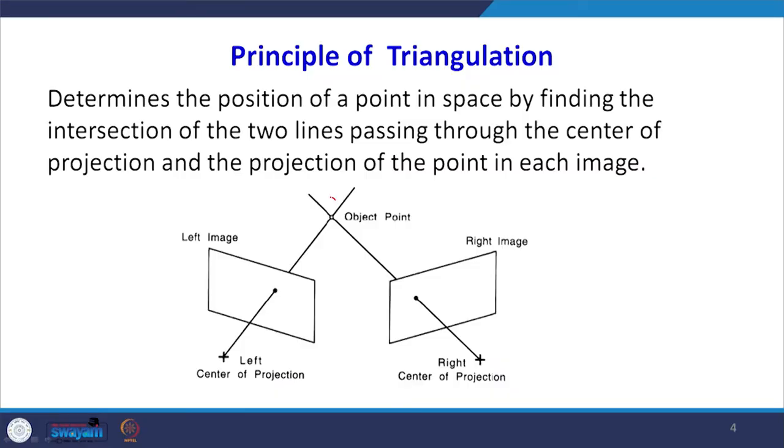We need stereo images which have parallax present, meaning taken from 2 different camera positions. We are using the principle of triangulation — a very popular principle in surveying — where angular measurements and distance measurements are used to determine the coordinates. Here we use that same principle of triangulation to determine the coordinates of the point which is common in both photographs. This is carried out using the capabilities of instruments or software.